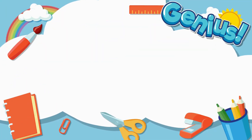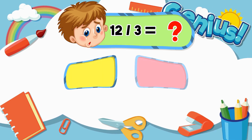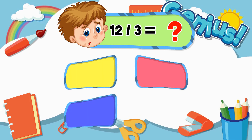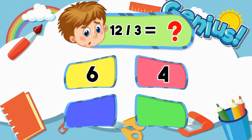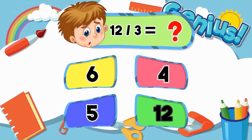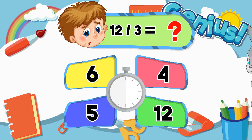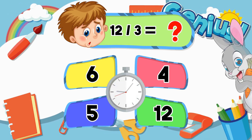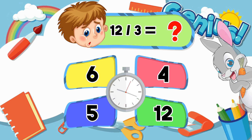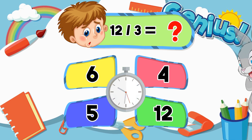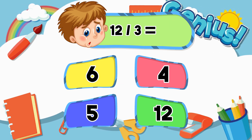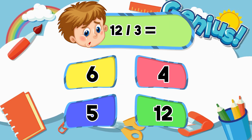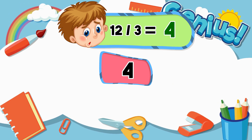What is 12 divided by 3? 6, 4, 5, 12. 4.